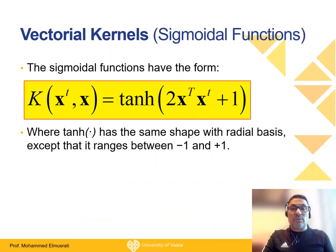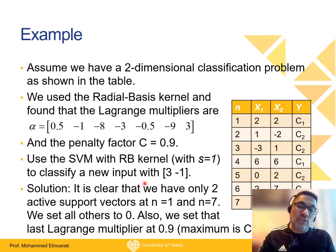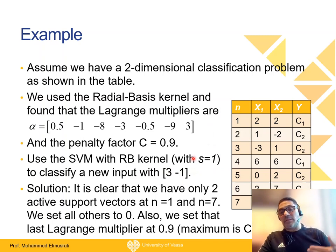I will skip the details that were explained in the lecture. Let's start with this example - we have a simple two-dimensional classification problem. We want to use radial basis kernel to classify a new input. Assume that we made calculations and found the Lagrange multiplier for each entry.